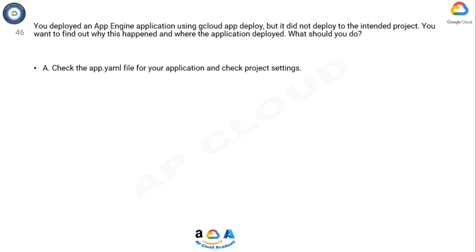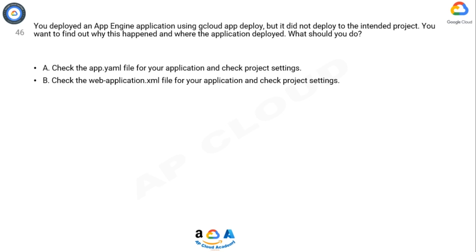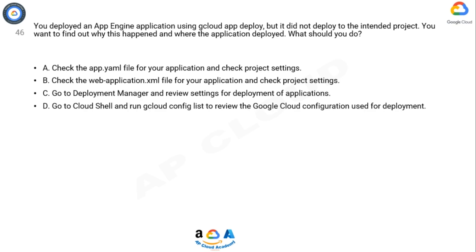Option A: Check the app.yaml file for your application and check project settings. Option B: Check the webapplication.xml file for your application and check project settings. Option C: Go to Deployment Manager and review settings for deployment of applications. Option D: Go to Cloud Shell and run gcloud config list to review the Google Cloud configuration used for deployment.